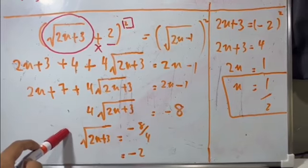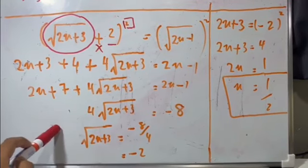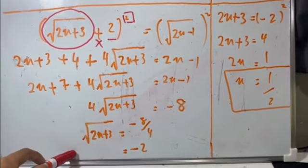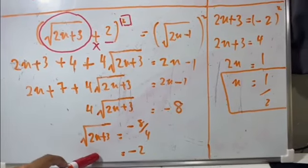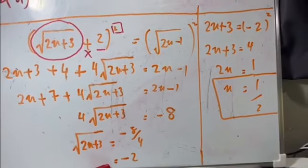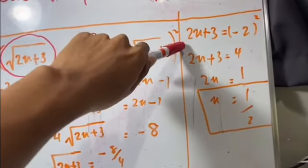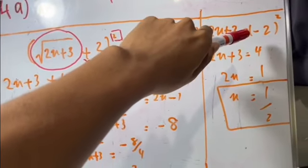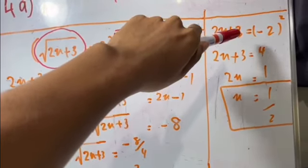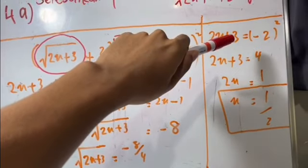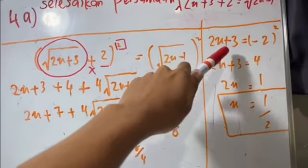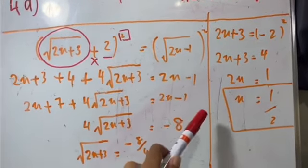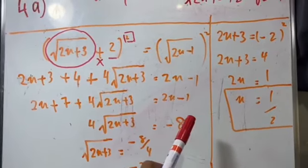4 cert 2x+3 ialah 4 darab cert 2x+3, so kita boleh pindah ke sini jadi bahagi. Jadi cert 2x+3 sama dengan -8 bahagi 4, sama dengan -2. Di sini pula, kita nak hilangkan punca kuasa ni, kita ubah ke belah kanan dan akan jadi kuasa 2. Jadi 2x+3 sama dengan 4. Pindah: 4 tolak 3 sama dengan 1, 2x sama dengan 1, x sama dengan 1/2.